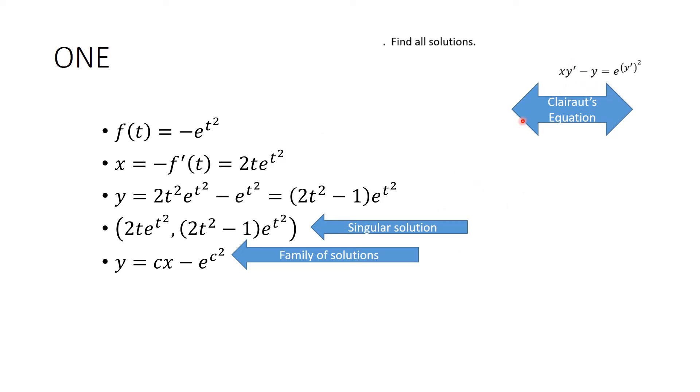If you rearrange this, this is Clairot's equation, and so you have a family of solutions that looks like this, and you have a singular solution whose answer looks like this, and you found it by doing this process. This is what x has to be, and y you get directly from Clairot's equation itself with that definition of x.